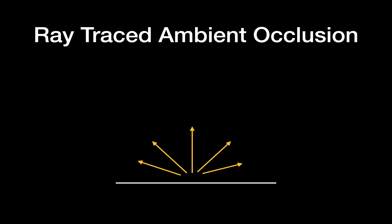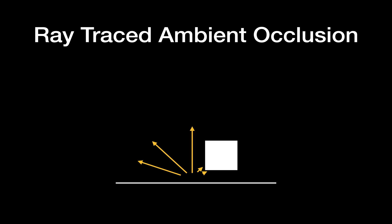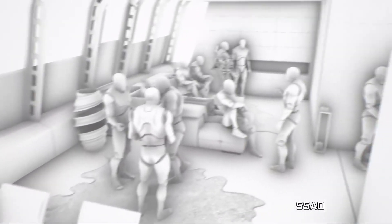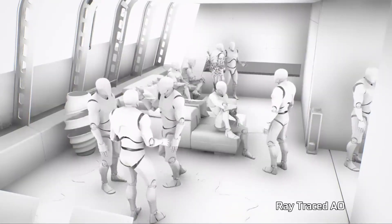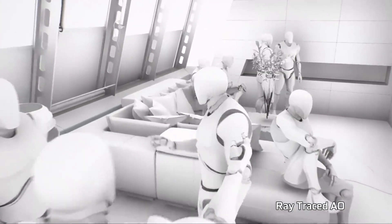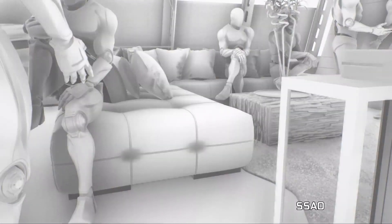Computing ambient occlusion is sort of like computing shadows, but the whole world is the light source. We cast rays in a hemisphere around the point that we're currently rendering. If all the rays hit nothing, the surface is zero percent occluded; if all the rays hit something, the surface is 100 percent occluded; but if only some of the rays hit something, the surface is partially occluded. Because of the huge number of rays required, this technique usually uses temporal accumulation, where a few rays are sent out each frame in random directions and the results are accumulated over time.